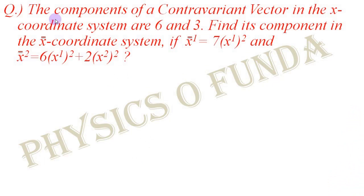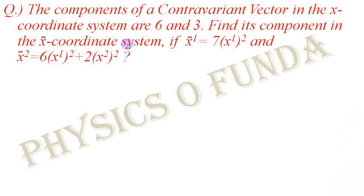Let us start with the first problem of today's video. The components of a contravariant vector in the x coordinate system are 6 and 3. So components in the unbarred coordinate system are given. We have to find out the components in the x-bar coordinate system, that means the barred coordinate system. For that, two relations are given: x1-bar is equal to 7x1 whole square, and x2-bar is equal to 6x1 square plus 2x2 square.